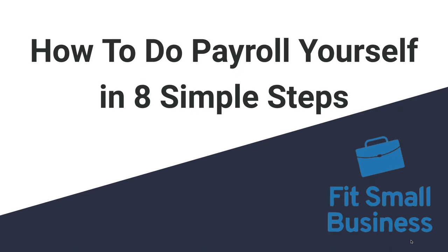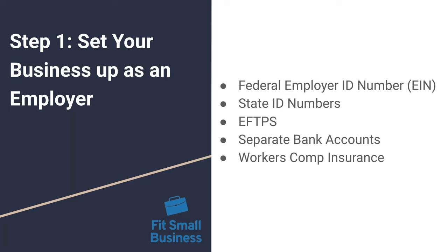Okay, so let's get started. The first thing you'll need to do is set your business up as an employer. You'll have to apply for a federal ID number with the IRS. You'll also need to apply for any state ID numbers in the states that you're processing payroll. Every state is a little bit different — some require that you just register with the Department of Revenue, while others require that you also register with the Department of Labor or other relevant agencies. You'll also need to sign up for an account with the EFTPS, the Electronic Federal Transfer System, which is the online system you'll use to make your tax payments.